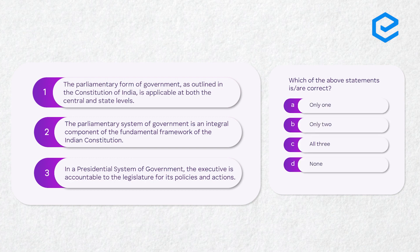The first question has some statements. You need to identify which of the following statements are correct. Statement one: the parliamentary form of government as outlined in the Constitution of India is applicable at both the central and state levels. Statement two: the parliamentary system of government is an integral component of the fundamental framework of the Indian constitution. Statement three: in a presidential system of government, the executive is accountable to the legislature for its policies and actions. Which of the above statements are correct? Only one, only two, all three, or none?